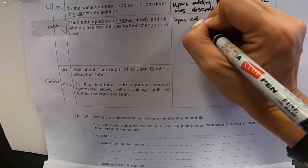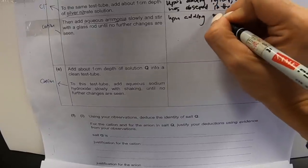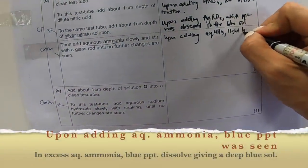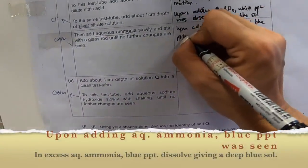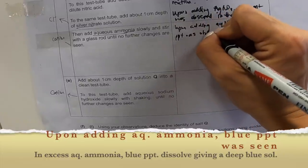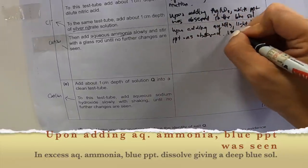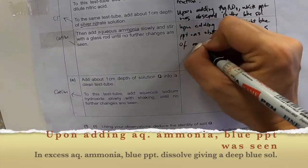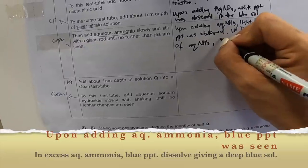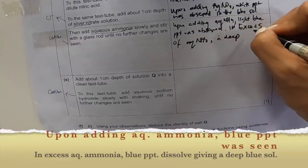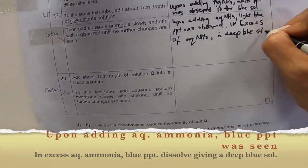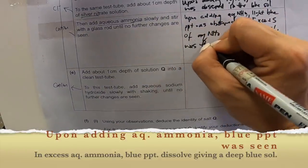They say add until no further changes is seen. It's very obvious that this portion here... I have a blue solution already. And it's a deep blue solution. So I don't even need a glass rod. In fact, I just need to see and add things slowly. So I'm going to write down my observation. Upon adding aqueous NH3, which is aqueous ammonia, light blue PPT was observed. If in excess of aqueous ammonia, a deep blue solution was formed.